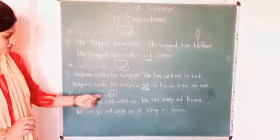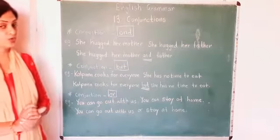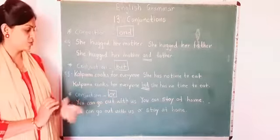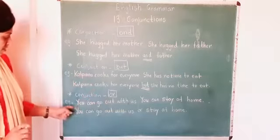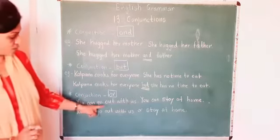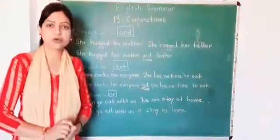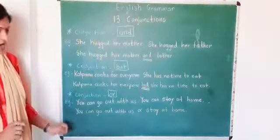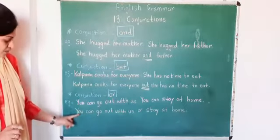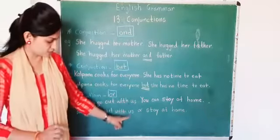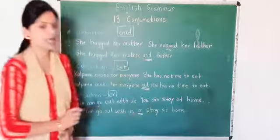We use conjunction 'or' when there are two options, or when we have to choose one option from two. For example: You can go out with us. You can stay at home. These are two sentences. Using conjunction 'or': You can go out with us, or stay at home.